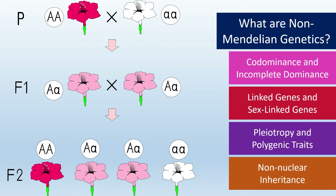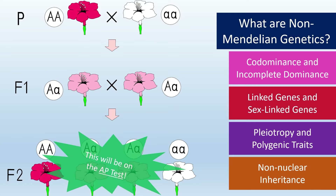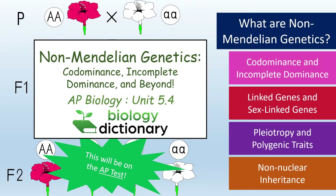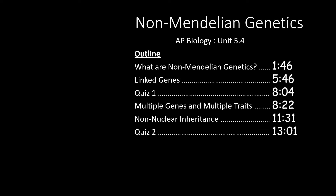Furthermore, there are also organelles like mitochondria and chloroplasts that carry their own DNA and are inherited in a much different pattern than normal chromosomes. Elements of non-Mendelian genetics will definitely be on the AP test, so stick with us for a quick overview of everything you need to know. This video covers section 5.4 of the AP Biology curriculum.